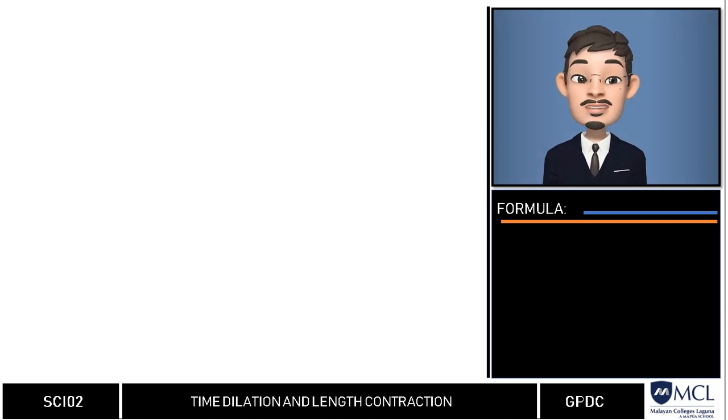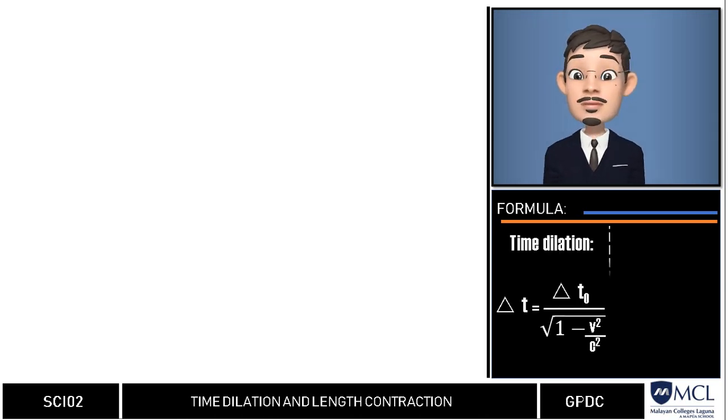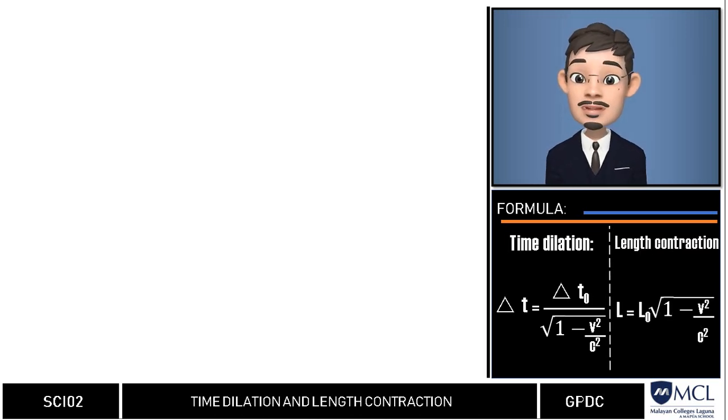First, to compute for time difference, our formula is delta t is equal to t sub zero over the Lorentz factor, while for length contraction, our formula is L is equal to L sub zero multiplied by the Lorentz factor.